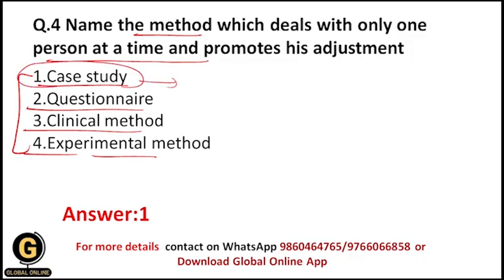Case study is the method that deals with only one person at a time and also promotes that person's adjustment — meaning the researcher does the study according to that person's adjustment. Questionnaire is a self-reporting technique in which the researcher asks questions to respondents and respondents themselves give the answers.